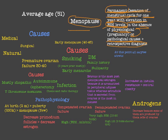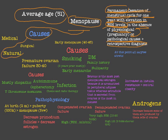The average age of menopause is 51 years. Now, menopause is a natural process, but it may also be caused by medical diseases, drugs, or surgical causes like oophorectomy.